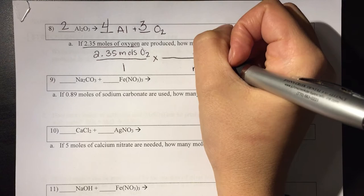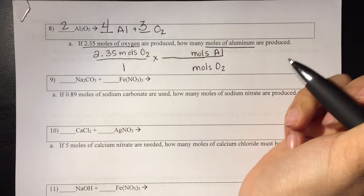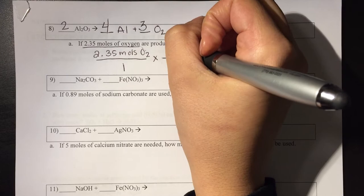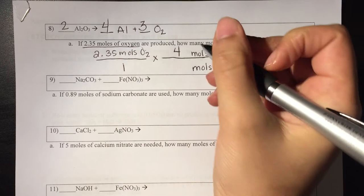Then what I'm trying to figure out is moles of aluminum. So I'm going to put moles of aluminum up here. Then I'm going to go back to my equation to figure out what is my mole ratio. So moles of aluminum is 4 and moles of oxygen is 3.